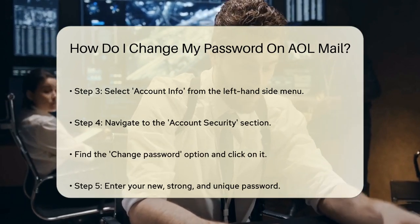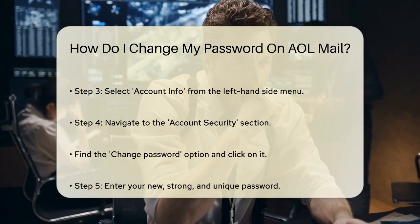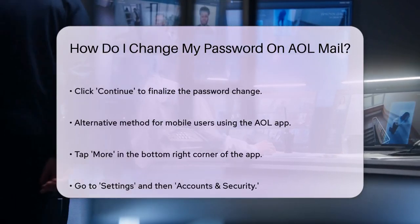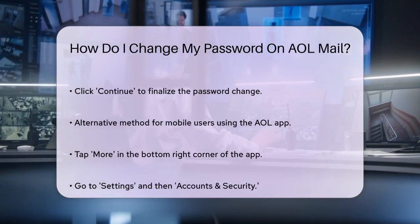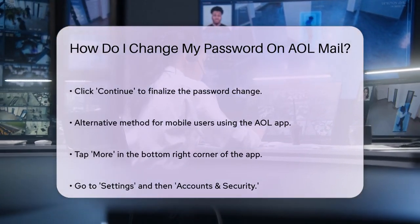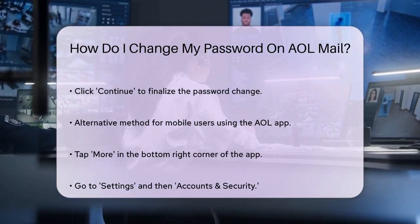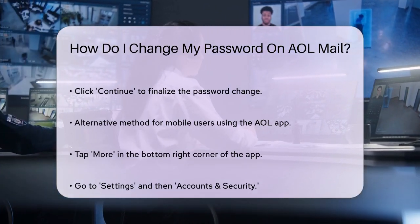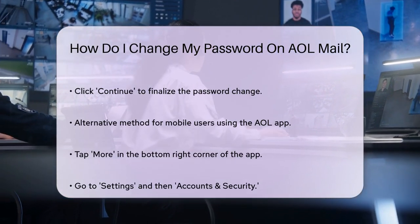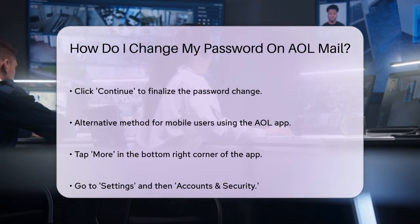If you're using a mobile device, the process is slightly different. Open the AOL app on your phone, tap More in the bottom right corner, and then go to Settings. Under Accounts and Security, tap Manage Accounts, enter your username, and then tap Forgot Password. AOL will send a security code to the phone number on file. Enter this code and you'll be able to change your password.